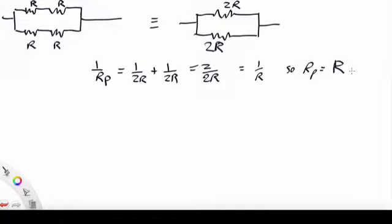So in other words when we have two equal resistors in parallel the equivalent is just half of the resistance of each of them.